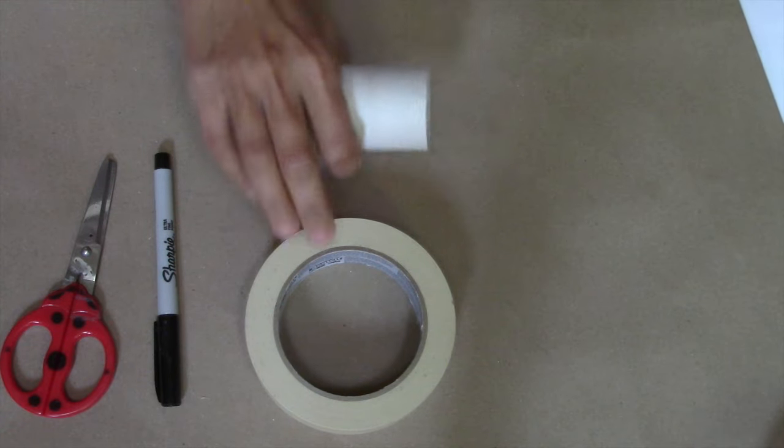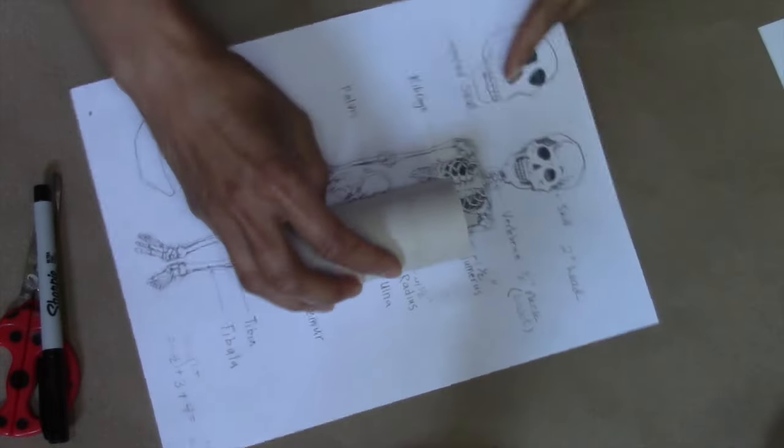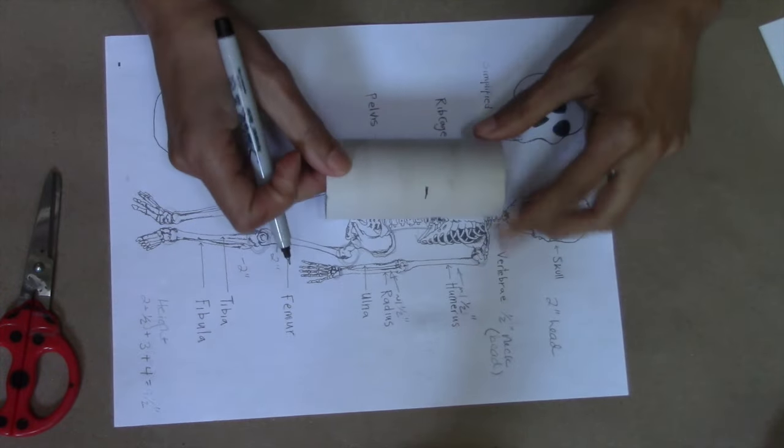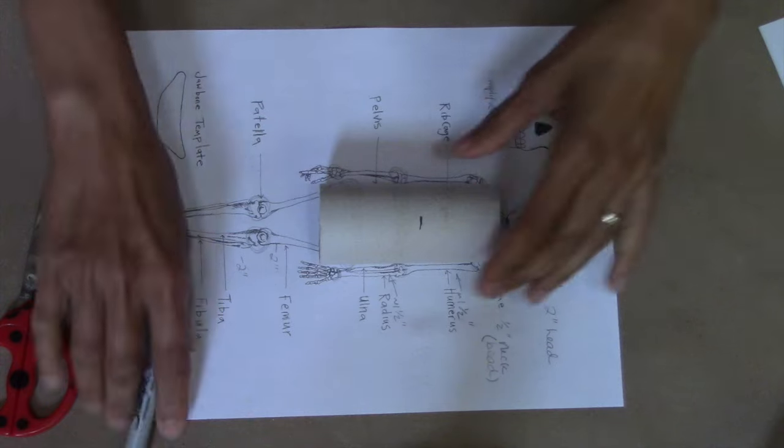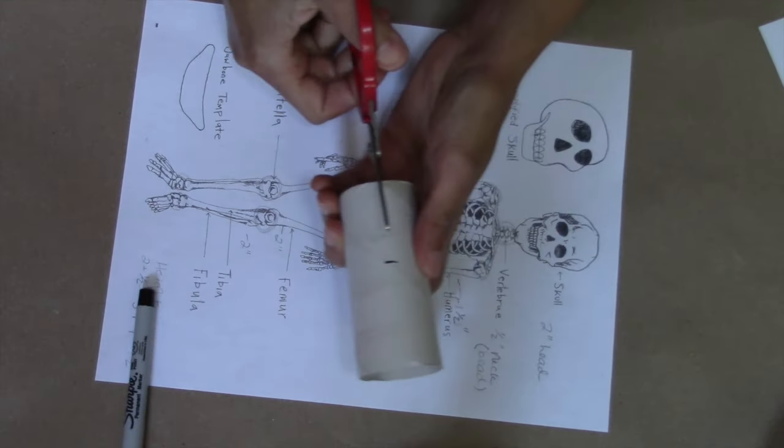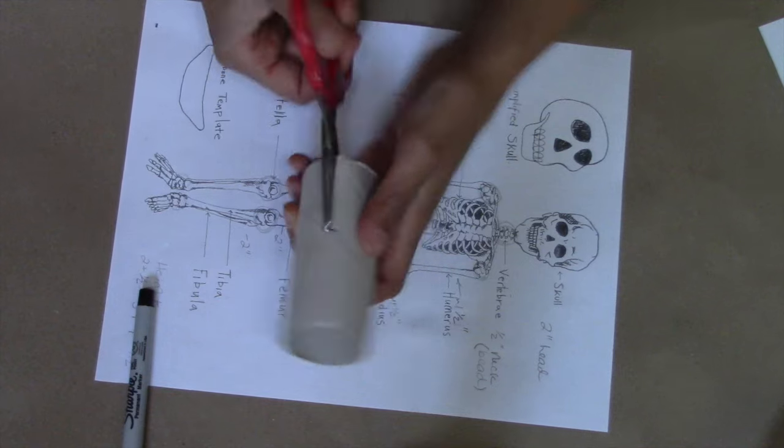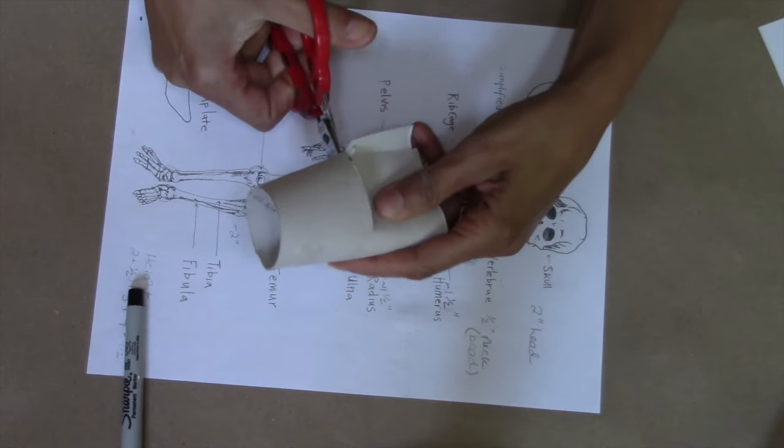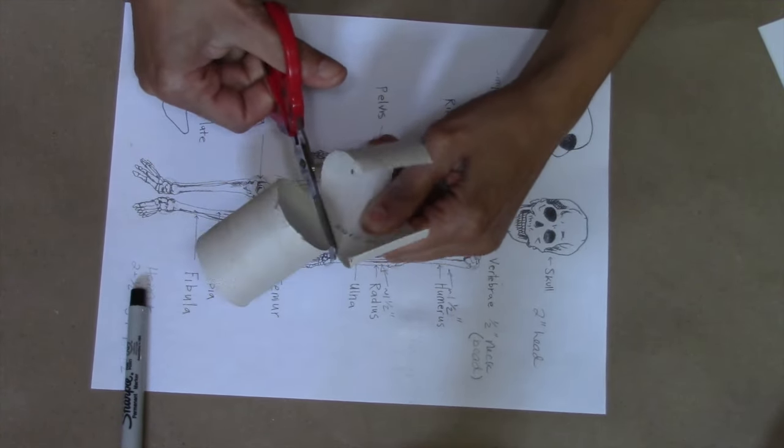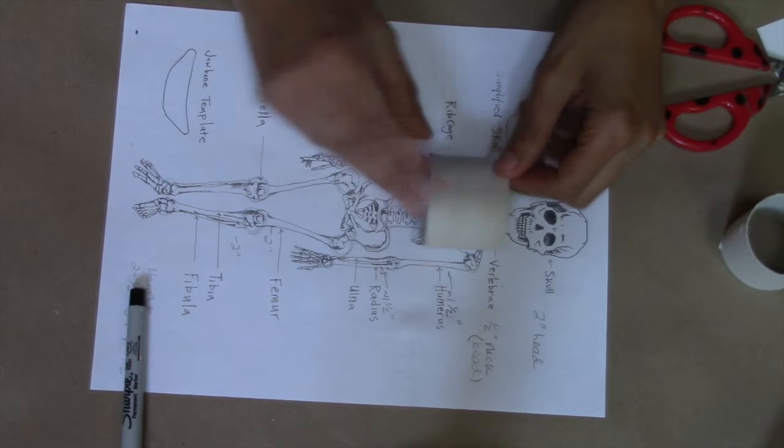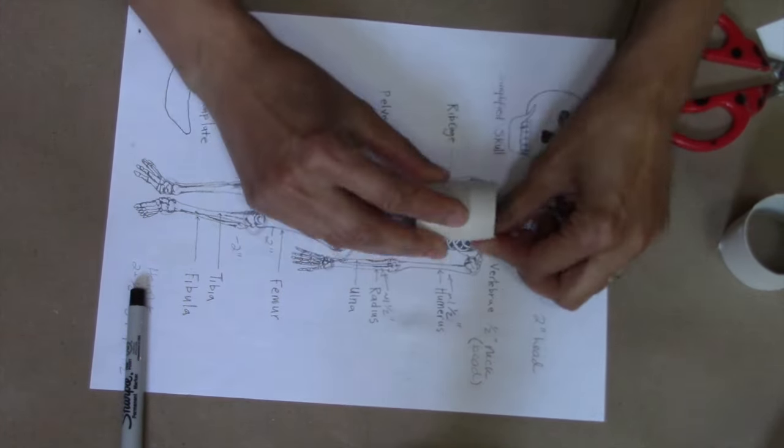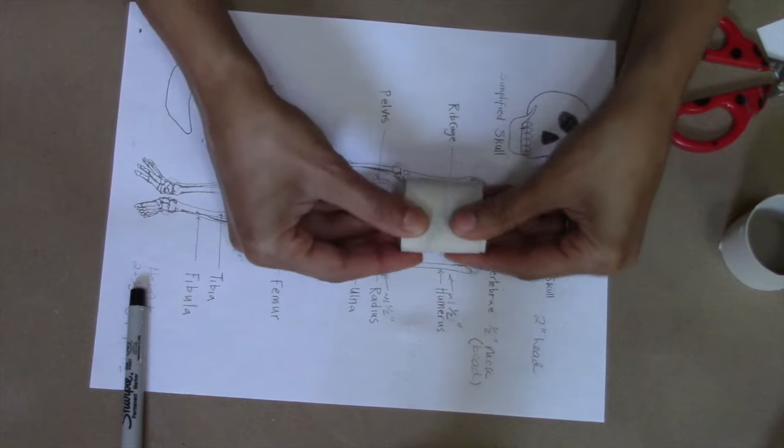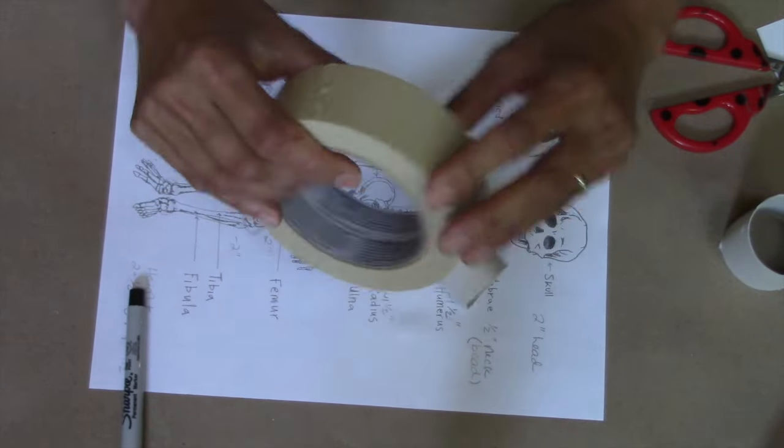Since I want to make my skeleton about the same size as the printed skeleton drawing, all I need to do is line the cardboard tube up with the top of the ribcage and mark the location of the ribcage bottom. I cut a straight line from the edge to the mark, then all the way around the tube. Then I just adjust the tube segment until its size closely matches the ribcage on the drawing, and seal it with a piece of masking tape. I will provide a list of all the dimensions I used for my skeleton parts later in this video.